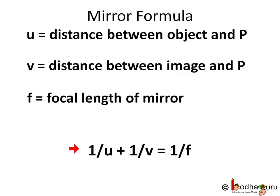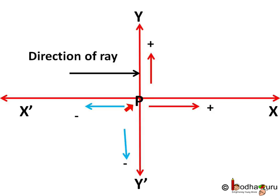Imagine the pole as the origin of a Cartesian graph, that is pole P is (0,0). All the distances measured in the direction of incident ray from pole are positive, and the opposite direction is negative.